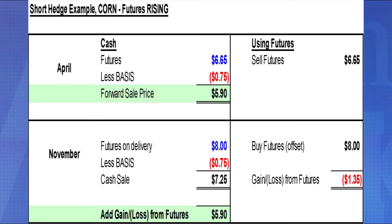In our second example, we're short hedging with corn using futures, but instead of futures falling, they're rising. In April, futures are $6.65 with basis at minus $0.75 under futures, for a forward sale price of $5.90. You sell futures at $6.65. By harvest in November, futures rise instead. Your cash sale is $7.25, but you buy back the futures position at $8.00. The loss on that futures position is $1.35. Subtracting that from $7.25, your net price is still $5.90.